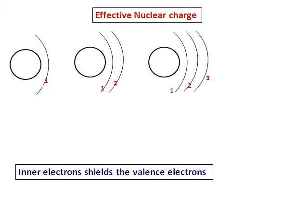We can also say that the inner electrons shield the valence electrons. If the valence electron is in orbit number 3, the electrons in orbits 1 and 2 shield it from the nucleus, and it experiences lesser effective nuclear charge. This helps make the removal of that electron easier.